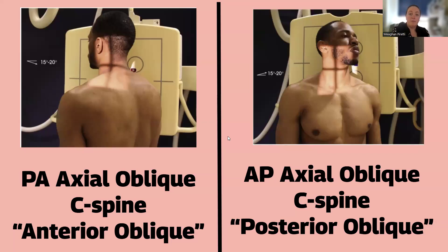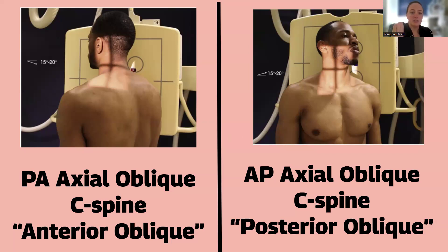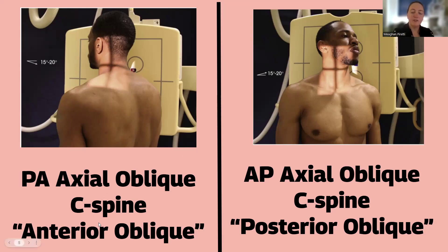Here's a C-spine oblique example. You can do them PA or AP. If it says PA axial oblique, this is technically an anterior oblique because when you're PA, that's the path of the beam — posterior to anterior — but their anterior is touching the IR. So this would be RAO because the right anterior is touching. Versus the AP axial oblique, which is a posterior oblique because the posterior portion of the body is touching the IR — here it's LPO. Just watch how the question is worded: if it calls it an anterior oblique, that's telling you what's touching the IR and the patient is actually PA.